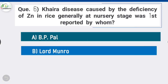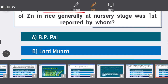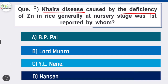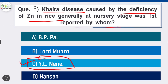Question 6: Khaira disease, caused by the deficiency of zinc in rice generally at nursery stage, was first reported by whom? Option C is correct: Y.L. Nene. In khaira disease, the tip of the diseased leaves first becomes yellow and then turns and dries. The disease was first reported by Y.L. Nene in 1966 at Pantnagar, Uttarakhand.